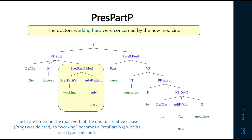Here's an example of a present participle phrase in action: 'The doctors working hard were concerned by the new medicine.' We can identify it as a present participle phrase because we can say 'the doctors that were working hard' — we can put the 'that' plus the progressive back in. We label 'working hard' as a present participle phrase because it has no subject, so it's not a clause. The verb 'working' is a present participle, with 'hard' as an adverb phrase adverbial describing the working. There's no direct object, so it's not transitive.